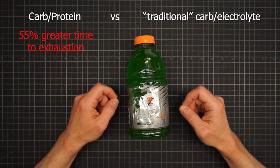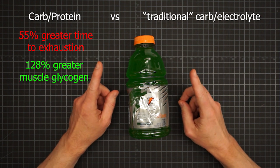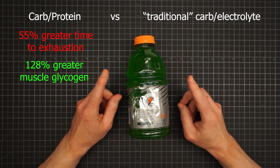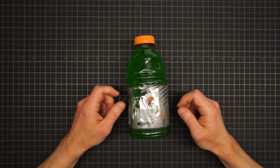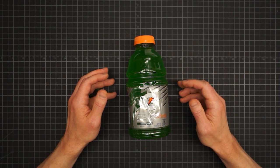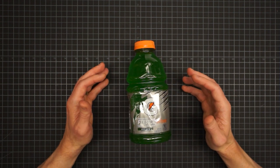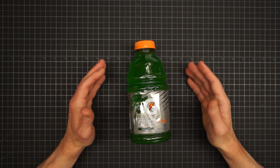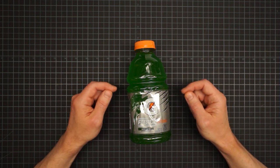They found the subjects who had previously recovered on the carb protein drink had a 55% greater time to exhaustion than the ones who recovered using only the traditional sports beverage. And being good science types, they ran a second experiment to test that. And what they found was significant. When subjects recovered on the carb protein beverage, they experienced 128% greater storage of muscle glycogen. That's a big difference.